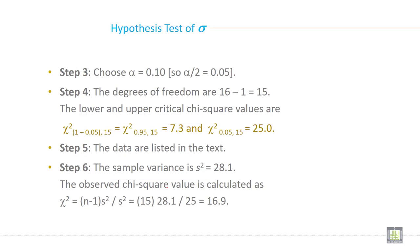Then step 3, choose alpha. It is 0.10, so α/2 = 0.05 because it is a two-tailed test.